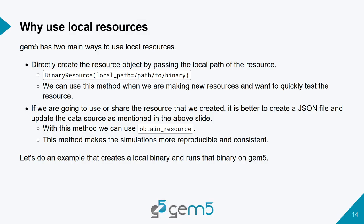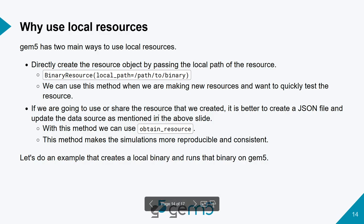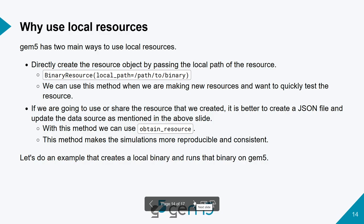There are two main ways to use local resources. First, if you have a binary you're actively working on, you can directly create the resource object — like BinaryResource or WorkloadResource — and specify the local path directly to your compiled binary or disk image. Second, as discussed, you can create a JSON file and use obtain_resource just as you normally would with GEM5 resources. Let's do an example for both.